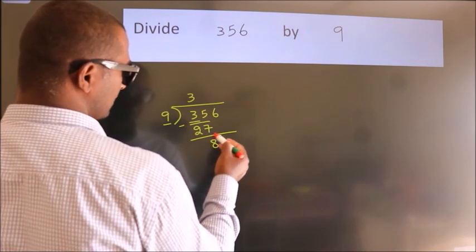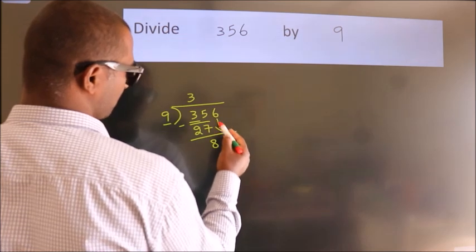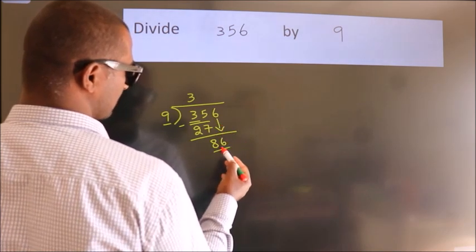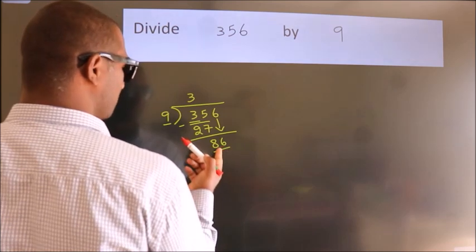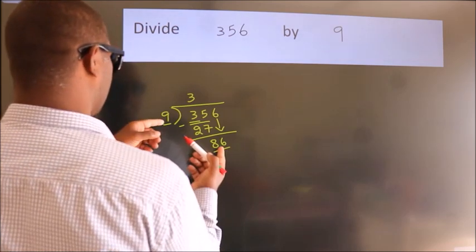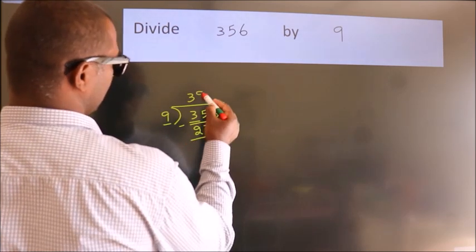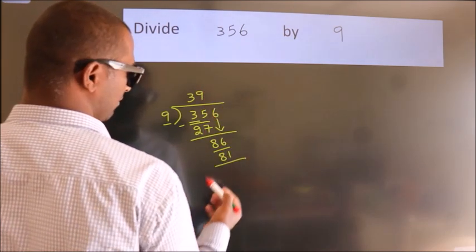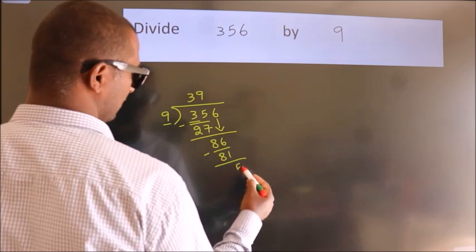After this, bring down the beside number. So 6 down. So 86. A number close to 86 in the 9 table is 9 nines, 81. Now we subtract. We get 5.